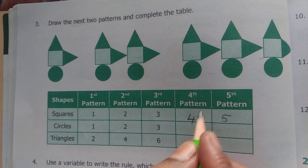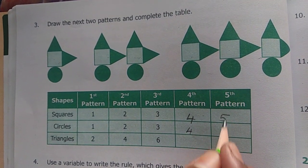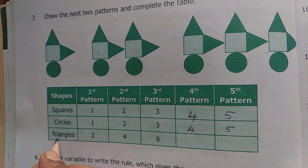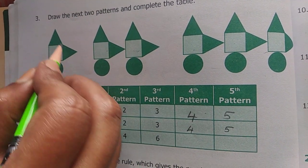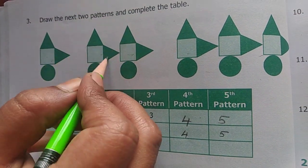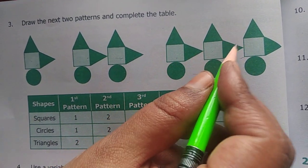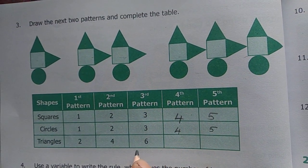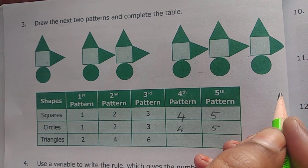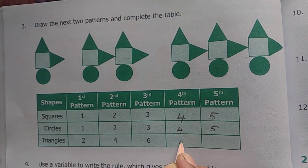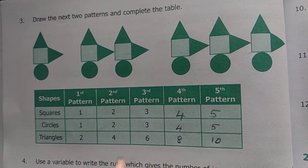Circles: second one, two, three, four. Third one, two, three, four, five, six. Next 4 patterns count 8, next 10. That is over.